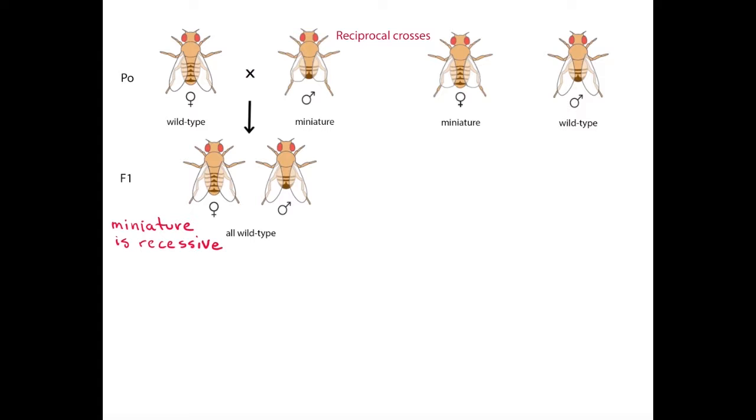Now let's look at the reciprocal cross. When we mate a miniature winged female with a wild-type male, we see that all the female offspring have wild-type wings, while all the males have miniature wings. Therefore, the sex of the parent carrying the mutant trait affects the outcome of the cross.